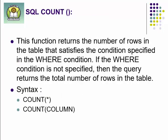The very first function is the COUNT function. What does it do? It returns the number of rows which satisfy the given condition. For example, if you want to find how many students come from a particular city, you need to do a counting — so you can use the COUNT function. This function returns the number of rows in the table that satisfy the condition specified in the WHERE clause. If the WHERE condition is not specified, then the query returns the total number of rows in the table.